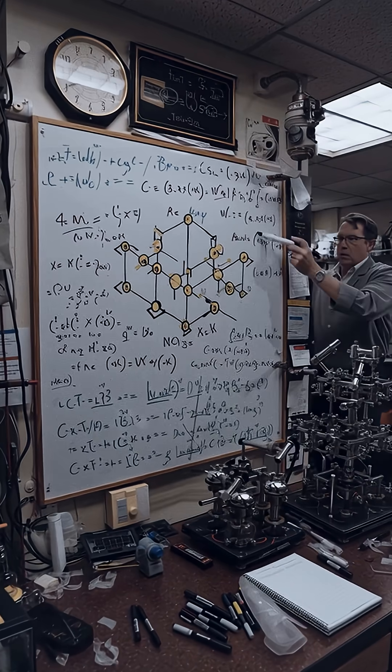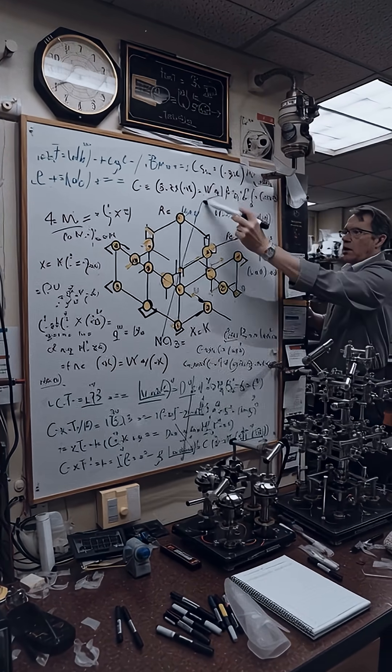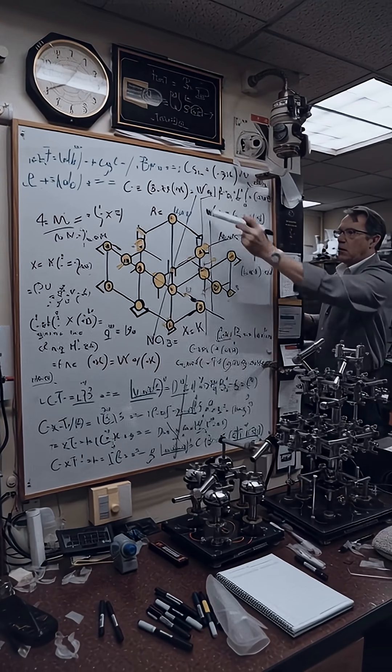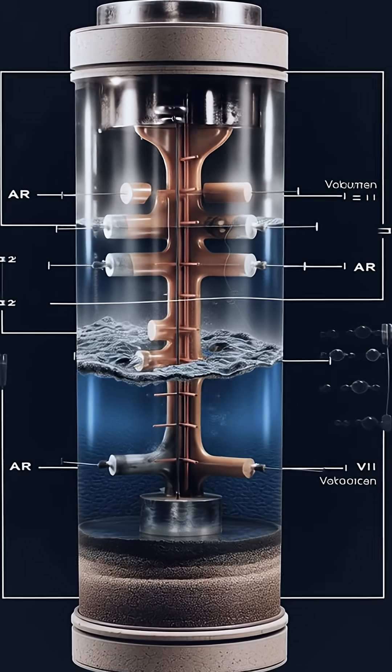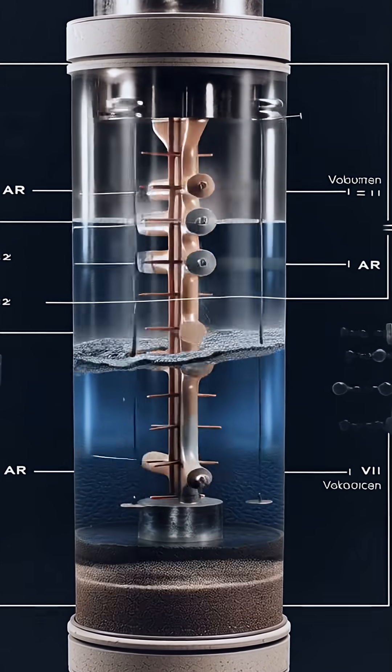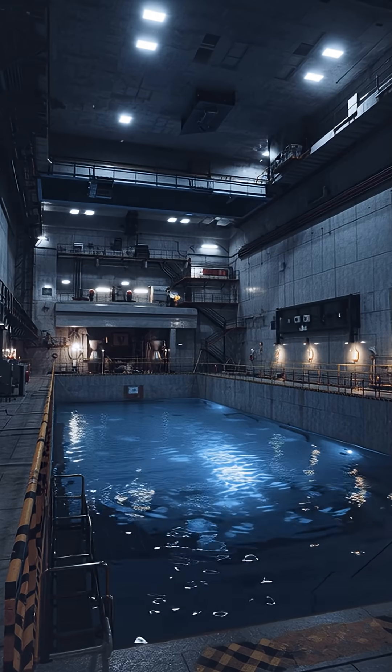Light in vacuum always travels at 186,282 miles per second, the universal constant C, but it slows when passing through matter because it is repeatedly absorbed and re-emitted by atoms.